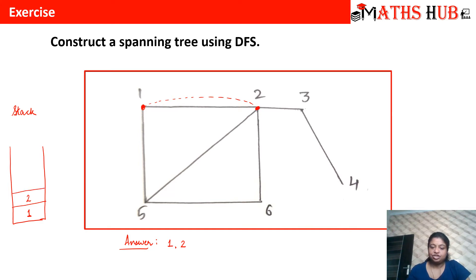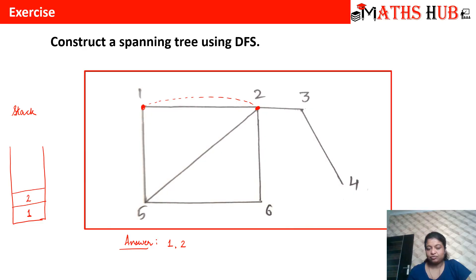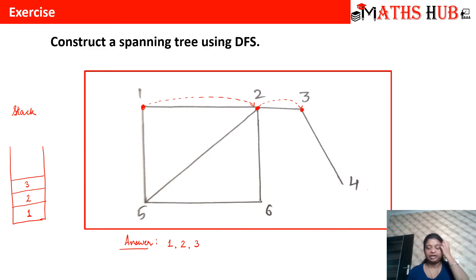Now let us put two in the stack. After reaching vertex two, let us see who its adjacent vertices are — we can see that five, six, and three are its adjacent vertices. It is your choice: you can move to five, six, or three. Let us move to vertex three. We will put three in the stack and write vertex three in our answer.